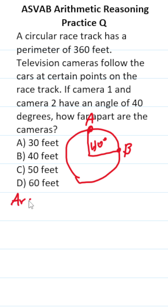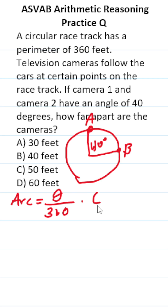To find the arc length in a circle, you're going to take theta, which is the measure of the central angle, over 360, and multiply it by the circumference of the circle.